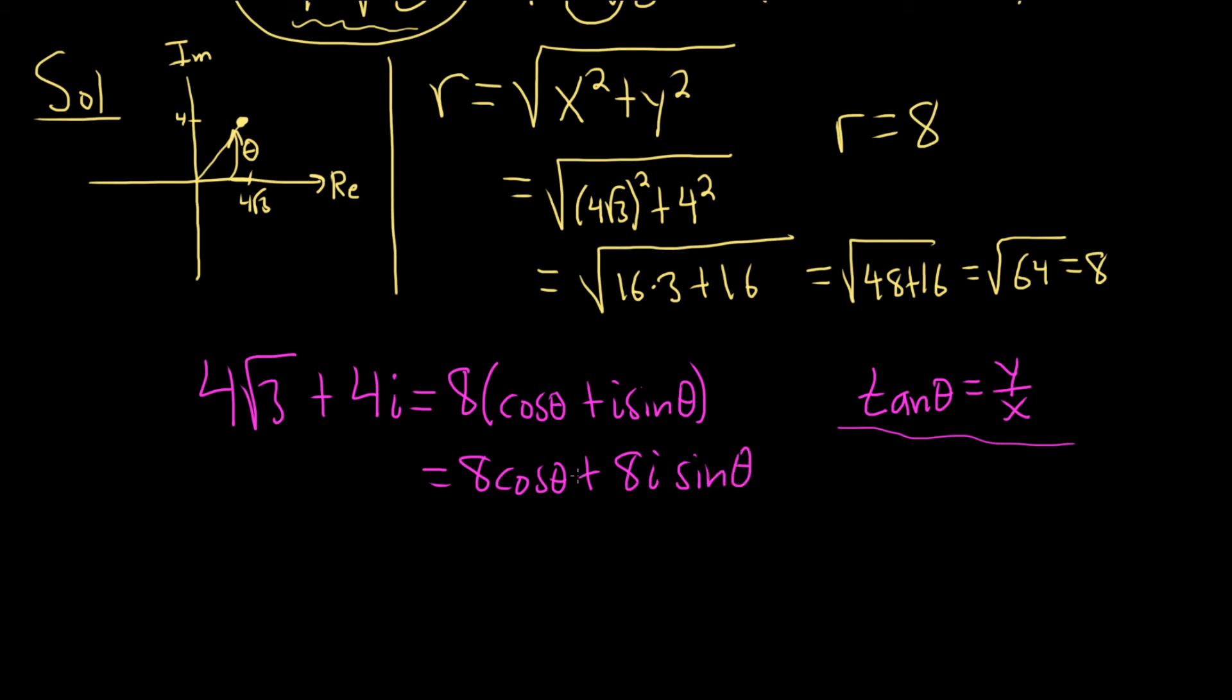And then use properties of complex numbers. Two complex numbers are equal only when the real parts are equal, so that would mean that 4 square root of 3 equals 8 cosine theta. And the imaginary parts are equal, so 4 equals 8 sine theta.